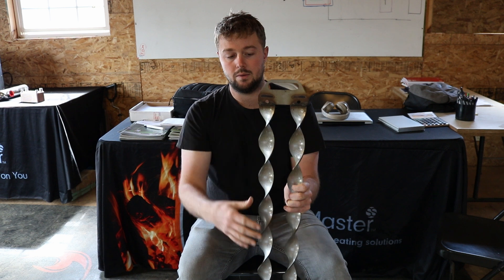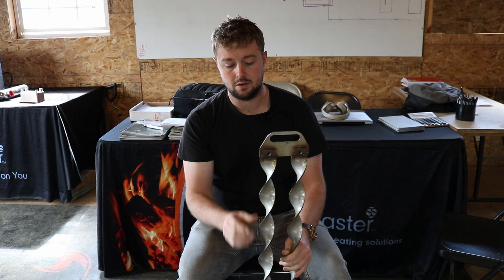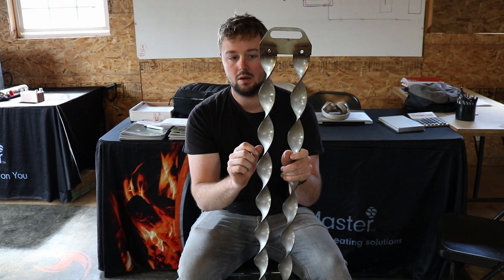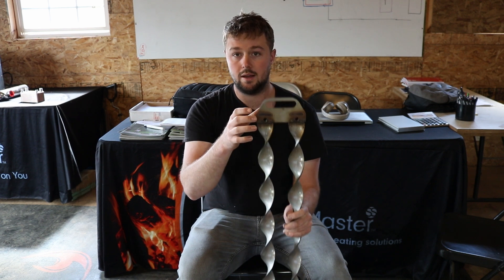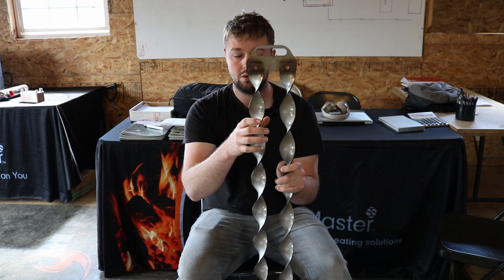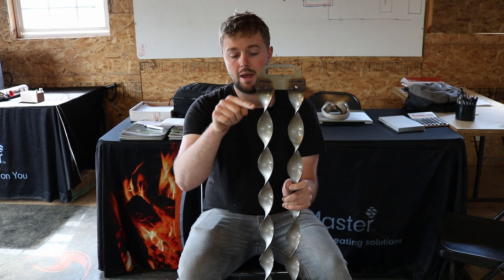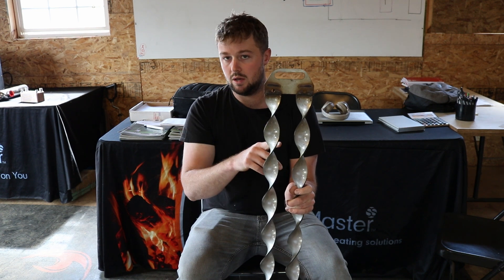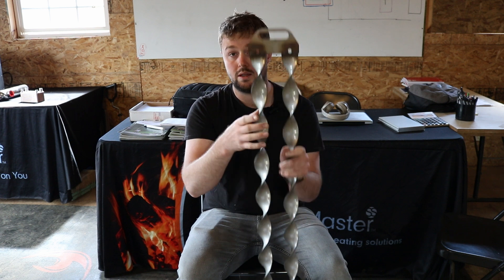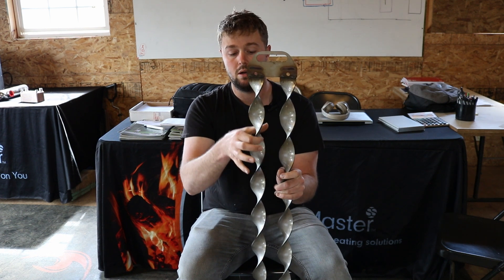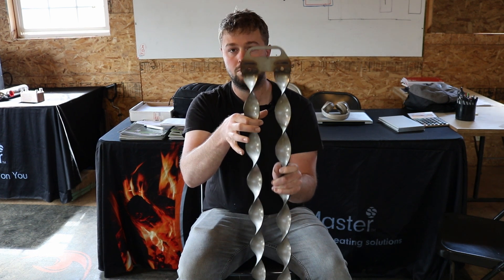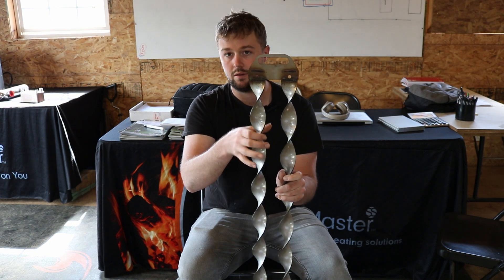So that's another thing we've seen with some of the competition. They have a much longer spiral, and their stroke length doesn't actually reach the length of spiral. So you end up having stripes of ash and creosote that don't get cleaned out because it doesn't actually do a full stroke for the length of spiral.